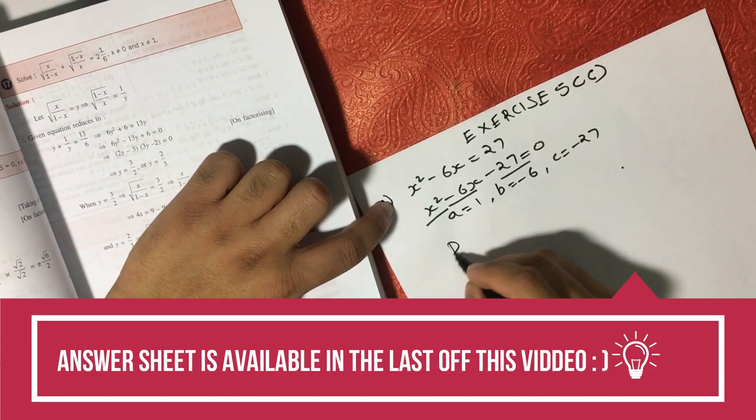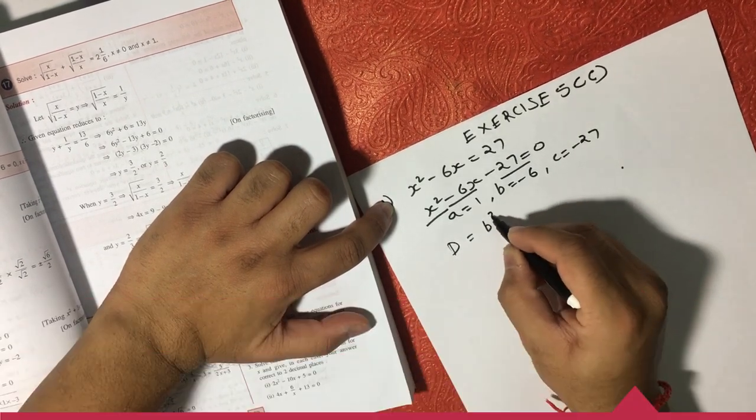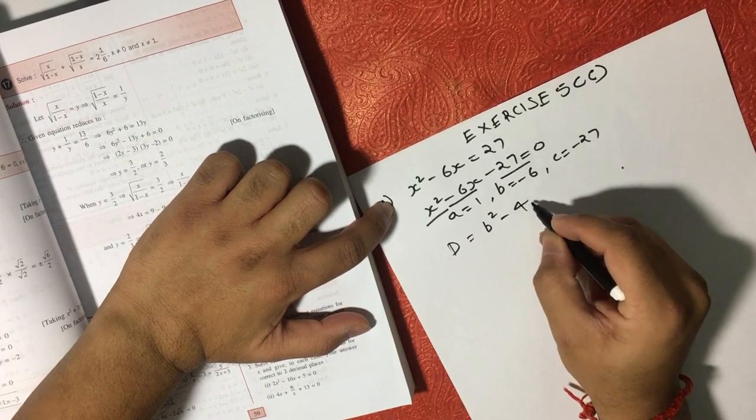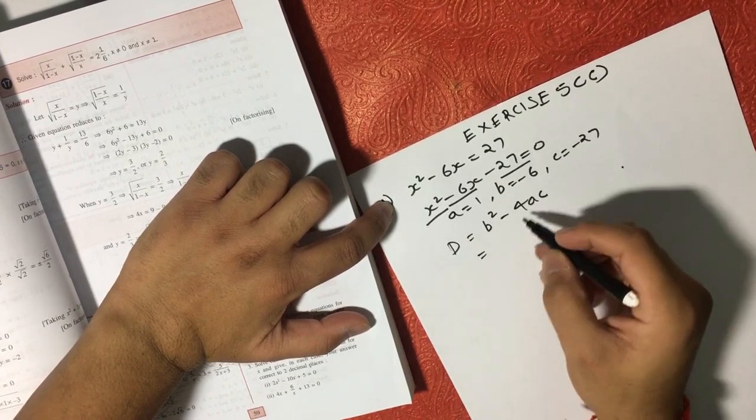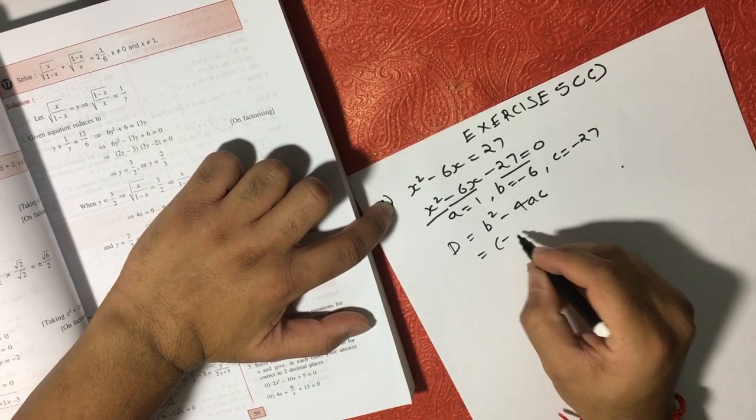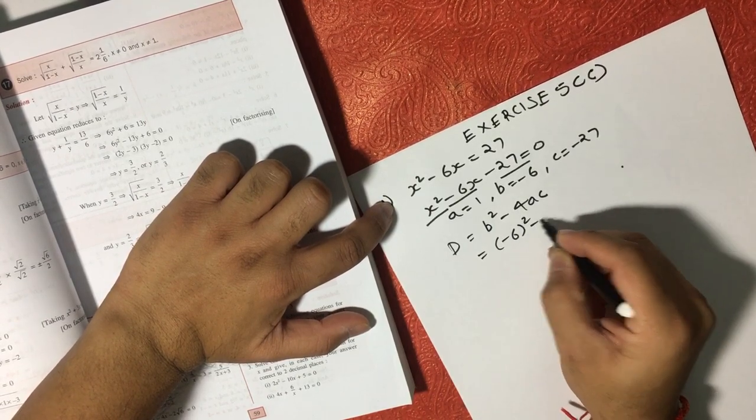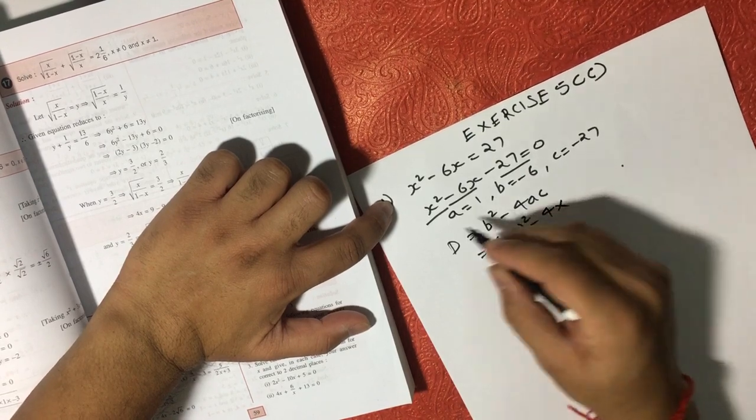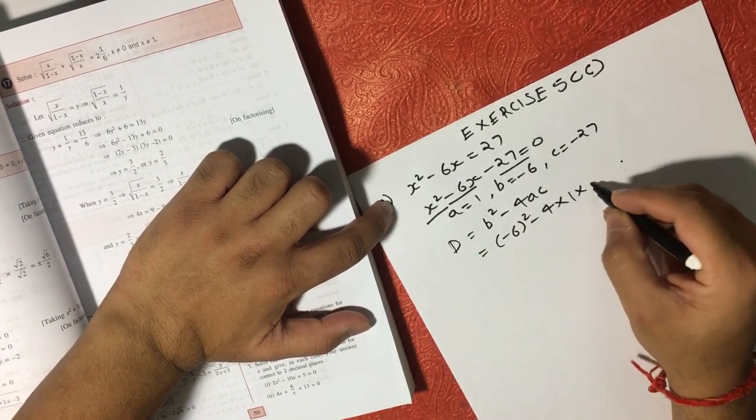Now we have a formula b square minus 4ac. So if we put the value here, b is minus 6, so that will become minus 6 square minus 4 into A, which is 1, into c, which is minus 27.